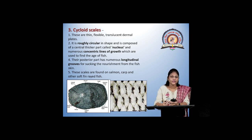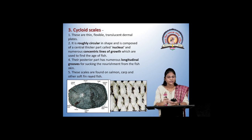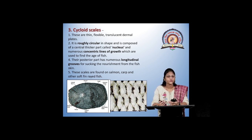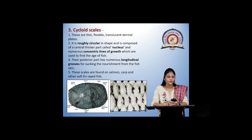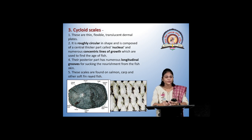Next is the cycloid scale. The cycloid scale is somewhat circular in shape. They have a middle nucleus part around which concentric lines of growth are formed. There are longitudinal grooves used for absorbing nourishment from the fish skin. By these concentric lines of growth, one can calculate the age of fishes. They show an overlapping structure. It is seen in salmon and carp.